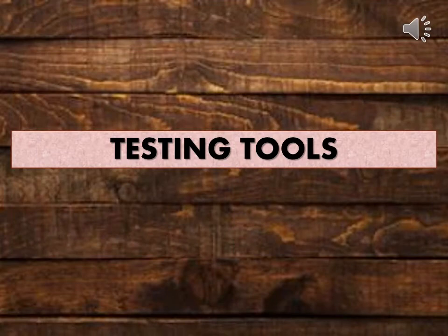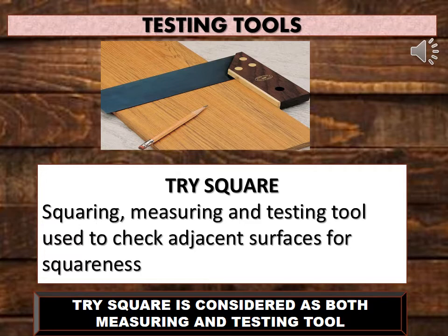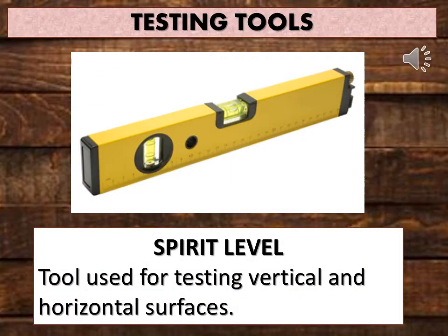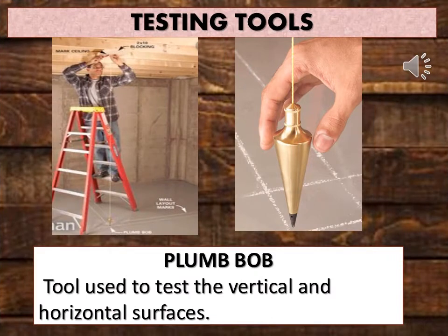The following are the tools used for testing. Tri-square: a squaring, measuring, and testing tool used to check adjacent surfaces for squareness — it is considered both a measuring and testing tool. Steel square: a framing square used to mark out work for squaring and checking of angles, used in the construction of roof framing and large furniture. Spirit level: a tool used for testing vertical and horizontal surfaces. Plumb bob: a tool used to test vertical and horizontal surfaces.